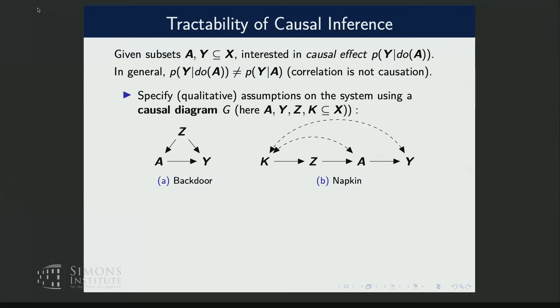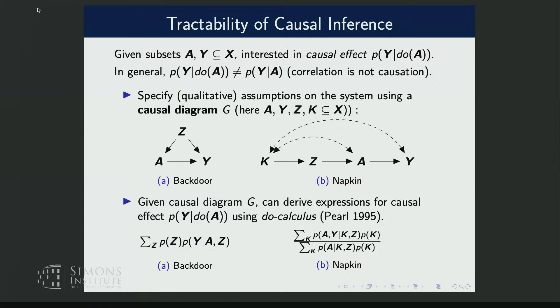The do(A) notation represents intervening — like forcing speakers not to include math. In general, this is not the same as the conditional distribution, which is basically stating that correlation is not necessarily causation. Given a causal diagram G and a causal query like P(Y | do(A)), in some cases you can derive expressions which are functions of the observed data. These formally give you an expression for the interventional causal effect, and different graphs yield different functions of the observed distribution.